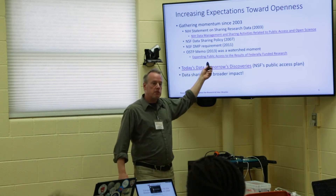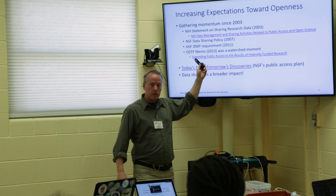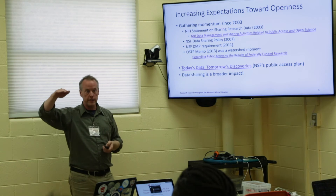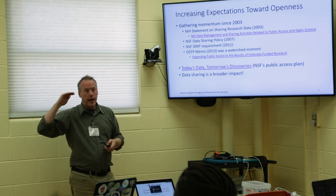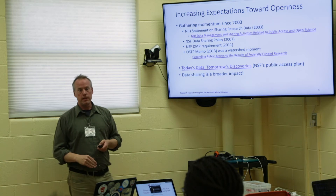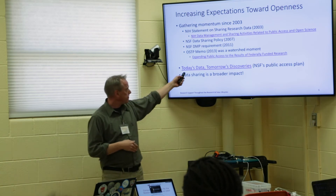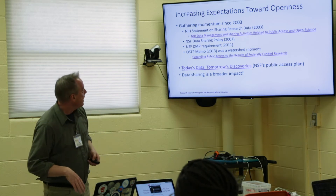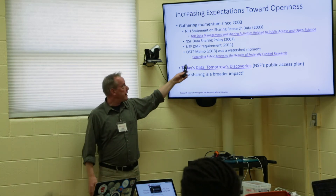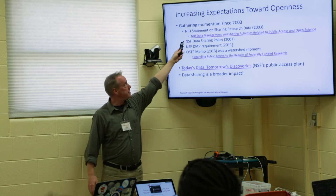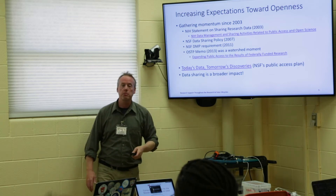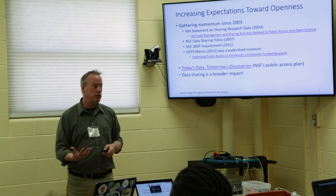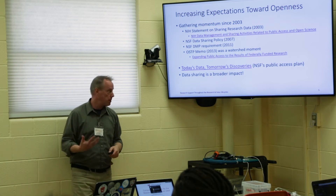Part of this mandate required all sponsoring organizations with over $500 million R&D in their budget to come up with a public access plan. NSF's public access plan came out in 2014–2015, laying out in much more explicit fashion than the highly generalized data sharing policy what it means and how you can go about making your data publicly accessible.